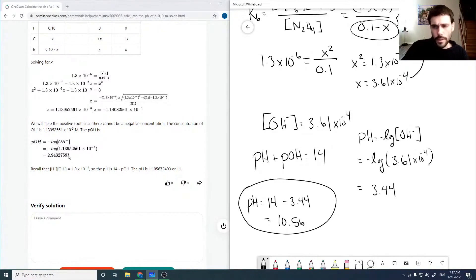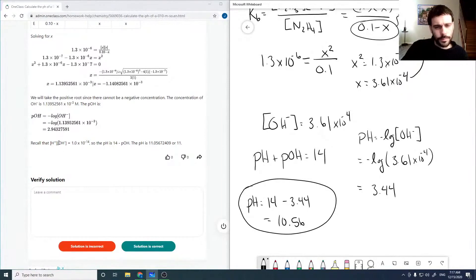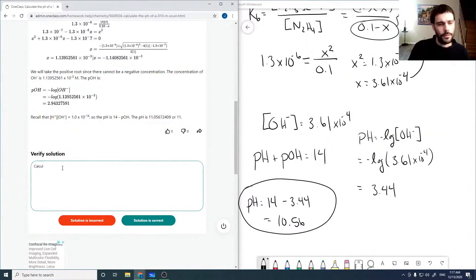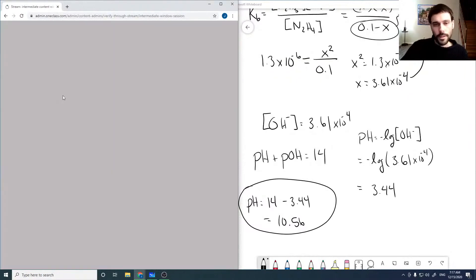Which then propagates and gives you an incorrect pOH. And in the end, an incorrect pH. So let's say there was a calculator error in the quadratic equation. It's basically correct.